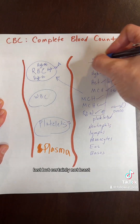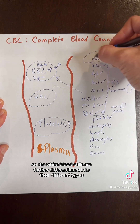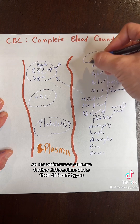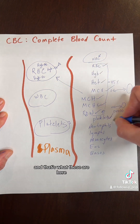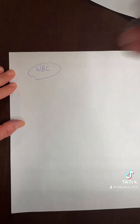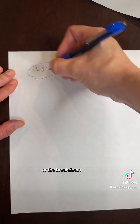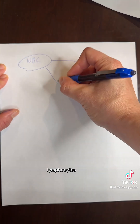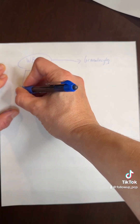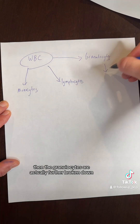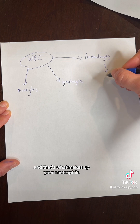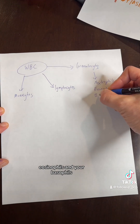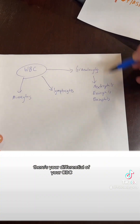Last but certainly not least, the white blood cells. White blood cells are further differentiated into their different types — that's what the differential is. The breakdown goes like this: granulocytes, lymphocytes, monocytes. The granulocytes are further broken down into three more categories: neutrophils, eosinophils, and basophils. There you have it — the differential of your CBC.